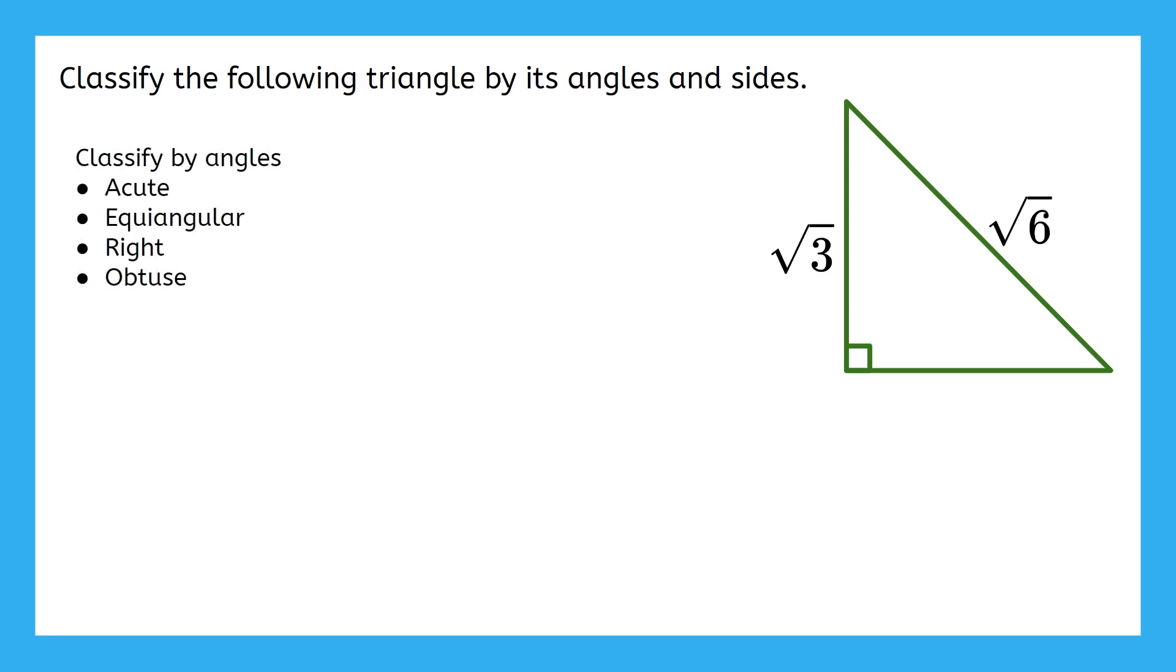Our options are acute, equiangular, right, or obtuse. Which do you think it is? It has two acute angles, like all triangles, but its other angle is right, making this a right triangle.